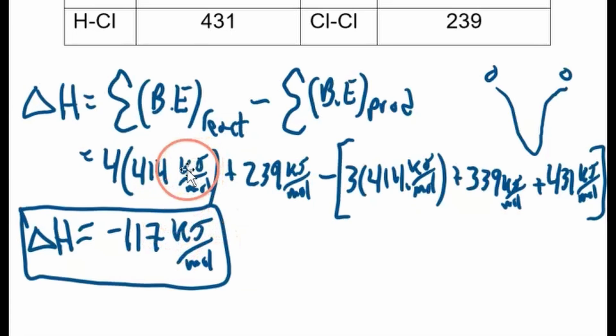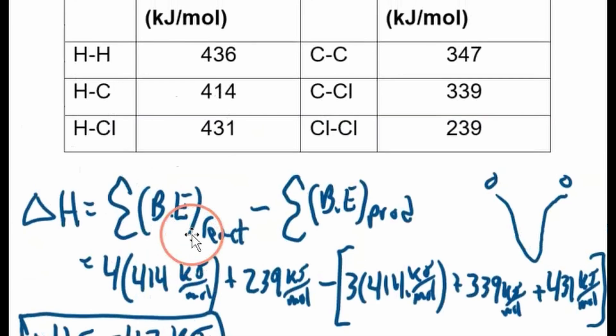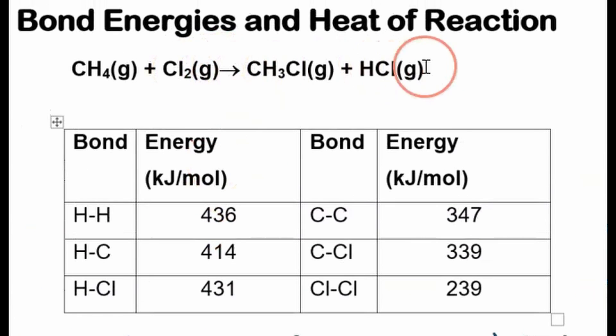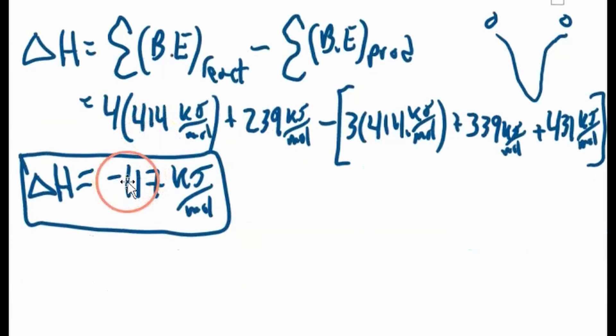So what this means is that even though we had to put energy in to break the bonds, overall it was negative. So we got more energy back. Energy was released overall when this reaction occurred. We put energy in to break these bonds, hypothetically, but then more energy was released to make the bonds than to break the bonds. That's why this is negative. So energy as heat would be released. This is an exothermic reaction.